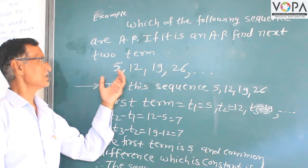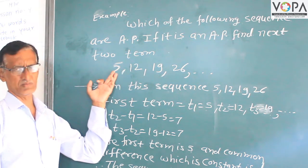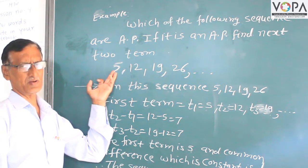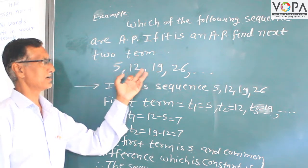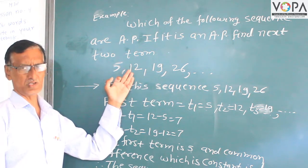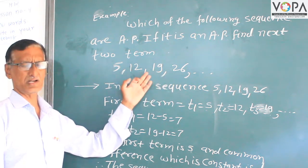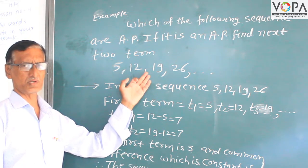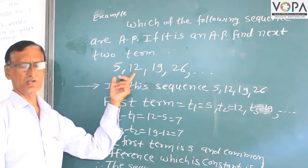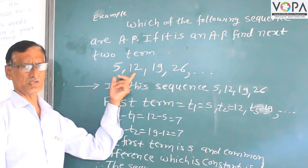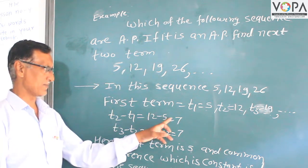Therefore, this sequence gives: 12 minus 5 is equal to 7. 19 minus 12 is equal to 7. 26 minus 19 is equal to 7. The common difference between consecutive terms is denoted by D. D is equal to 7.